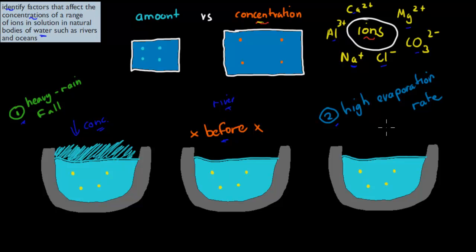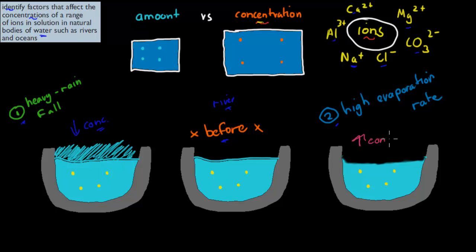What does the opposite is high evaporation rates. Evaporation means that water will be lost, so we have less water. But we still have the same amount of ions, because ions don't evaporate as easily. That means the concentration goes up and we have a more concentrated solution. So heavy rainfall would lower the concentration, and high evaporation rates would increase the concentration.